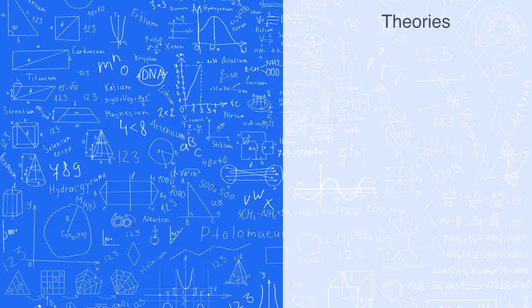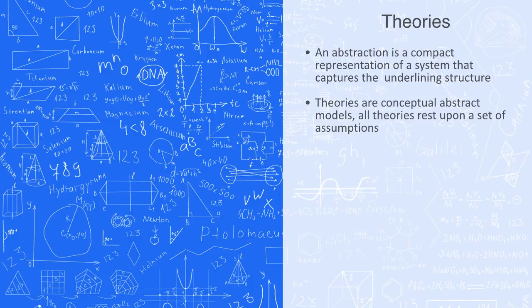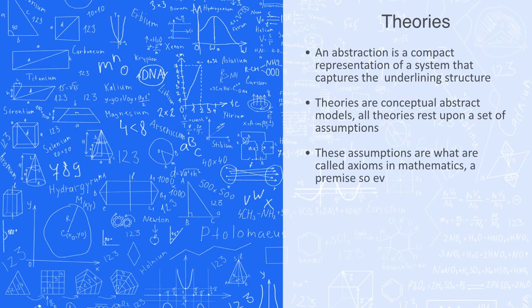In order to understand something in a coherent fashion, we need to create a model of it. If we want to try and understand something very complex, like a national or even global economy, these models are going to involve a very high level of abstraction. An abstraction is a compact representation of a system that removes successive layers of detail in order to capture the underlying structure and function of the system. Theories are conceptual abstract models. All theories rest upon a set of assumptions. Nobody likes the term assumption, particularly not in science. But the fact is that we can't question everything all of the time. We can, in practice, only question some things, some of the time. And in order to do this, we need to start from something that we consider self-evident. These assumptions are what we call axioms in mathematics, which is a premise so evident as to be accepted as truth without question by the theory. A coherent set of assumptions might be called a paradigm.